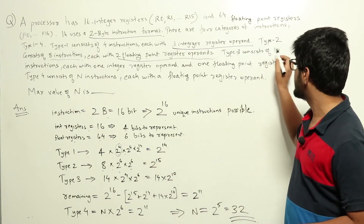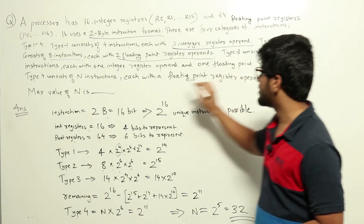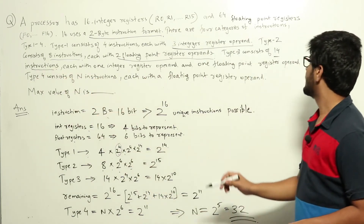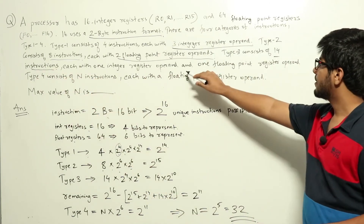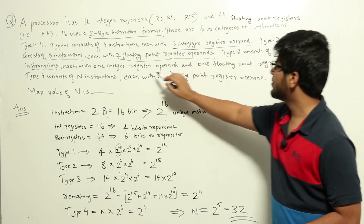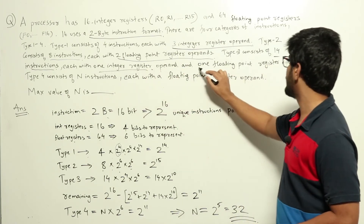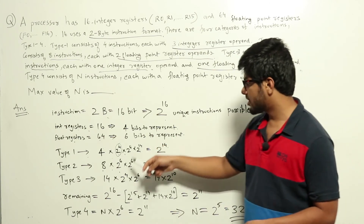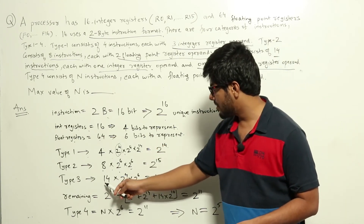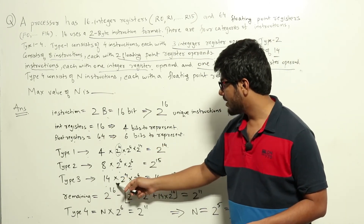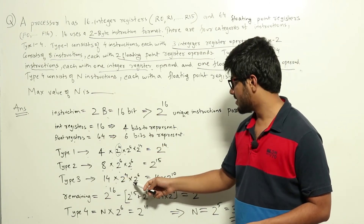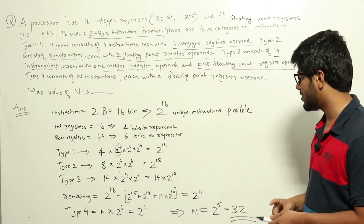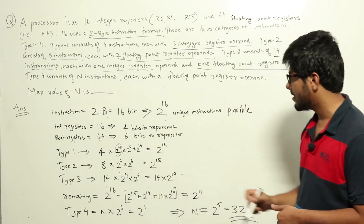Similarly, type 3 has 14 instructions, each with one integer and one floating point register operand. The total number of type 3 instructions is 14 into 2 power 4 for the integer register and 2 power 6 for the floating point register, which equals 14 into 2 power 10.